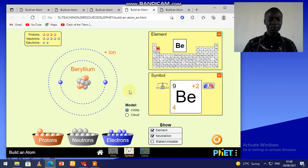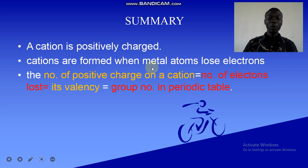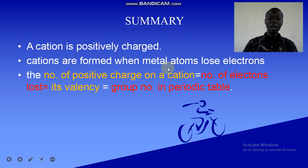To summarize cation formation: cations are positively charged ions, and they are formed when metal atoms lose electrons. Some non-metal atoms can also lose electrons — for example, hydrogen atom forms the hydrogen ion, and the ammonium ion is also a non-metal cation.